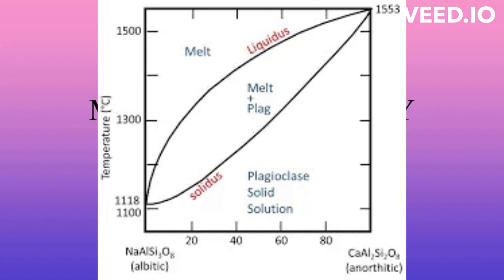Such a mineral can also consist of any intermediate percentage of either end-member. The compositional range between end-member minerals that exhibit complete solid solutions is known as a solid solution series. Substitution occurs when an element in a mineral formula can be replaced by another of similar size and charge to make a new mineral.